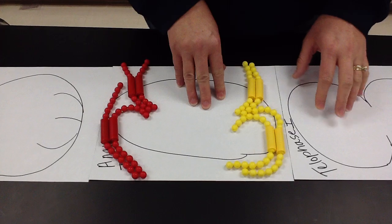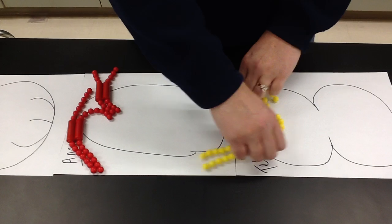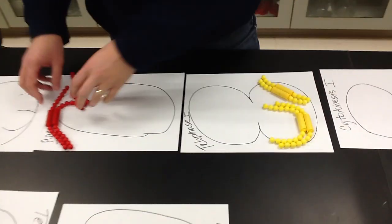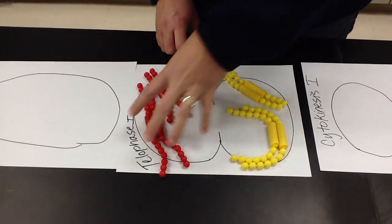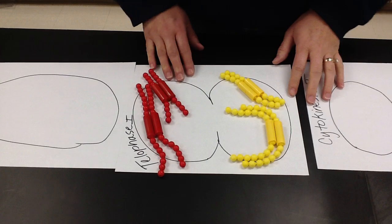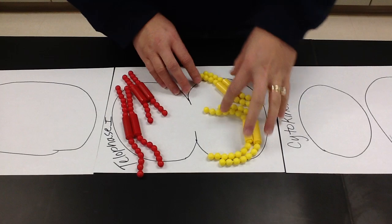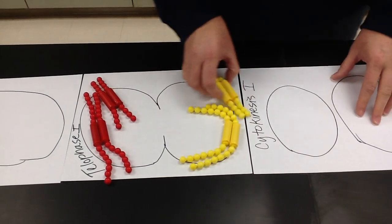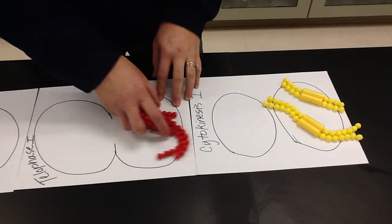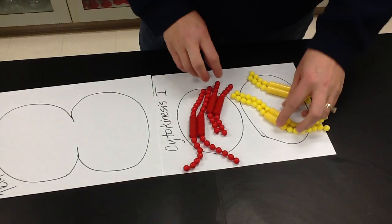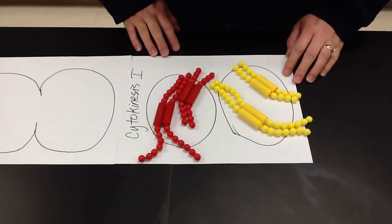Moving into telophase one, we're going to keep these that are at this pole still at that pole together. In telophase, the cell starts pinching inward to start to form two new cells. That's what's happening in telophase. By the end of meiosis one, we move into cytokinesis and we're going to have two cells. Notice that I kept the yellow together because they were at the pole together and I kept red together because they were at the pole together. So we have two new cells at the end of meiosis one.